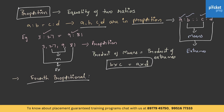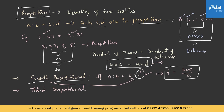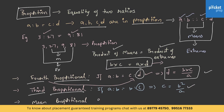Now let's understand what the fourth proportional means. If A is to B is equal to C is to D, then D is known as the fourth proportional, and its value can be obtained from the formula D is equal to B into C by A. For the third proportional, if A is to B is equal to B is to C, then C is the third proportional, given by C is equal to B square by A. All these formulae are derived from the standard formula: product of means equals product of extremes. The mean proportional of A and B is given by the formula root AB.